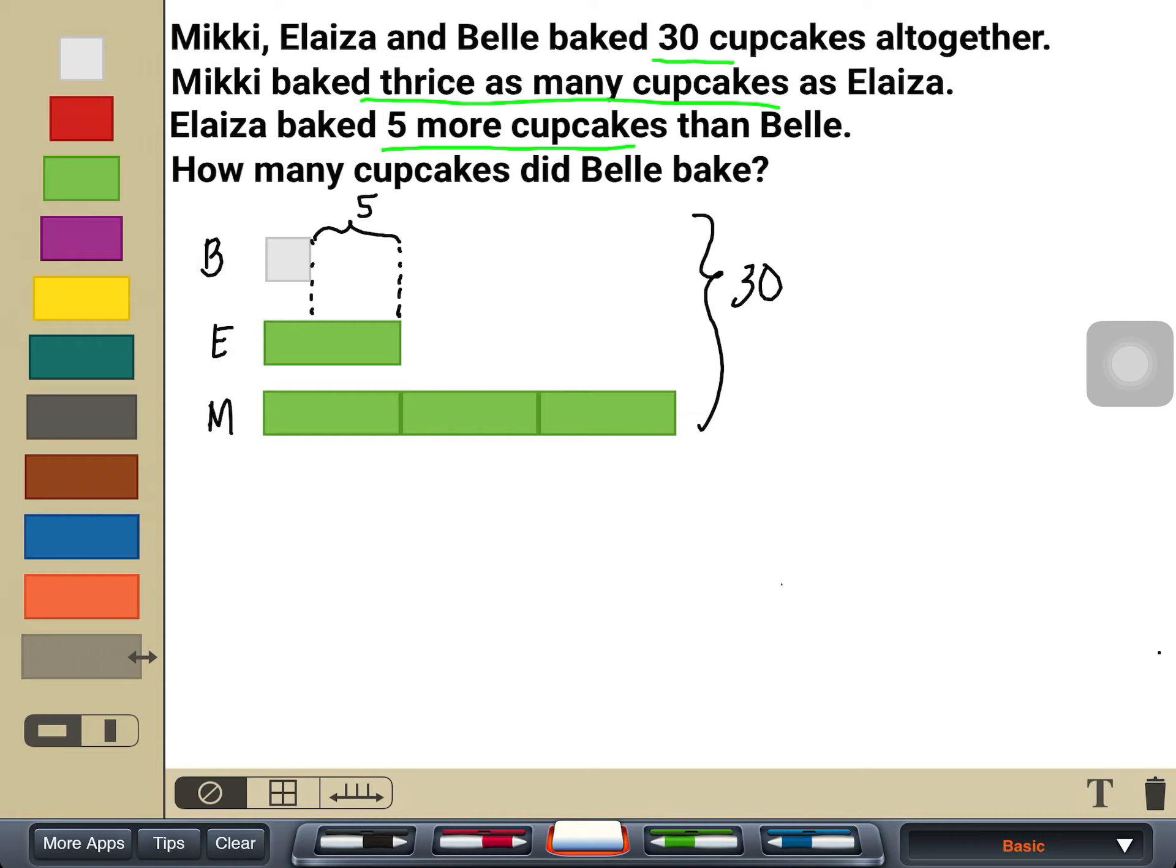Let's try and see. If I will make the bar model for Belle a green one, just like this, that would mean that I have to add what's missing. Because it says here 5 more, so the total should be 5 more. Because I put a bar longer than what it should be.